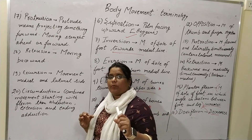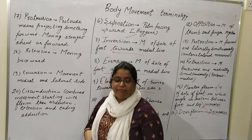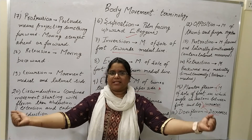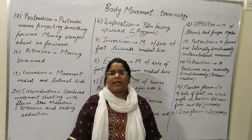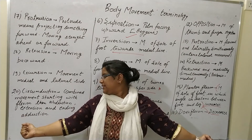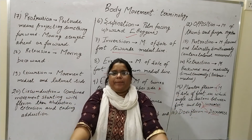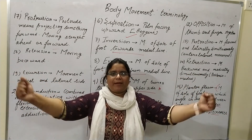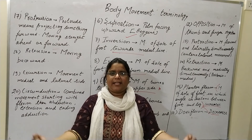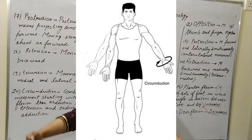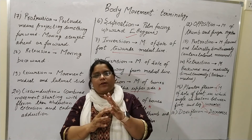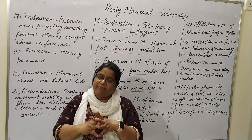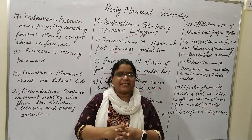Circumduction is a combined movement starting with flexion — where the angle decreases — then abduction, movement away from the medial line, then extension, then adduction. If I am making a circular movement like this, this is circumduction. So in circumduction, four movements are included: flexion, extension, abduction, and adduction. This covers the whole body terminology. If you have any doubt kindly ask in the comment section, otherwise please like, share, and subscribe. Thank you.